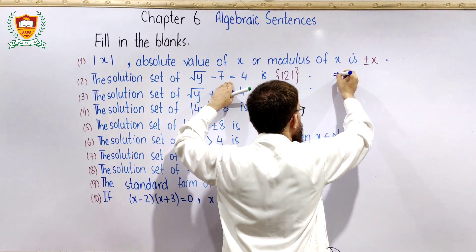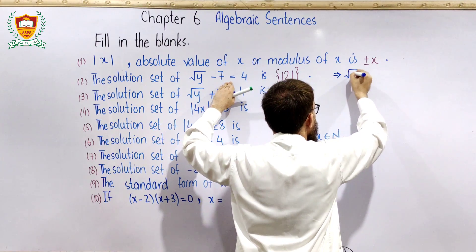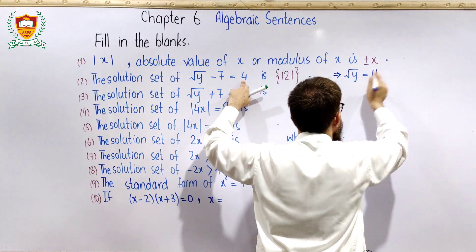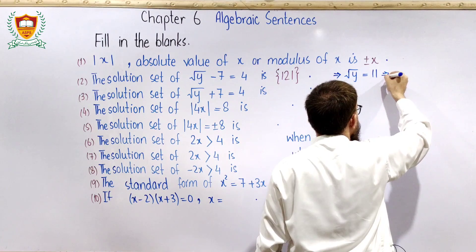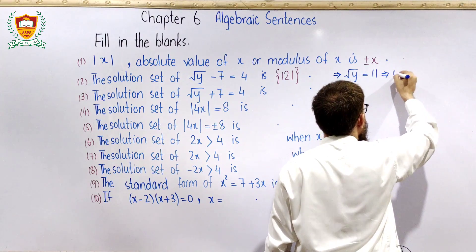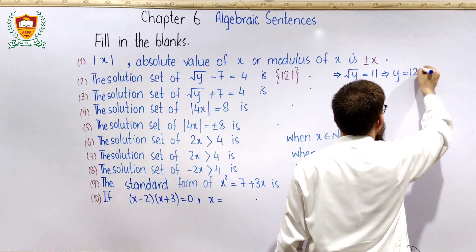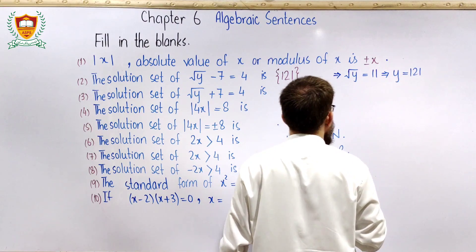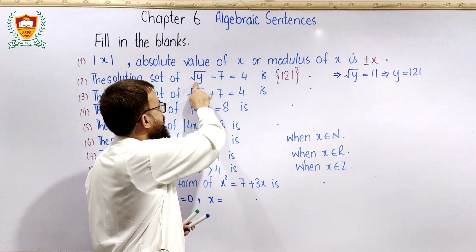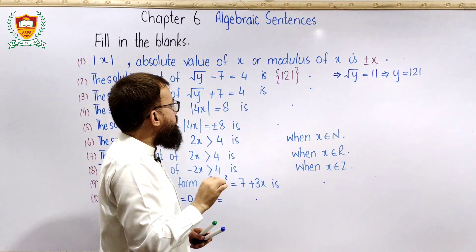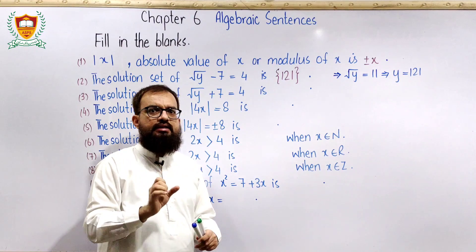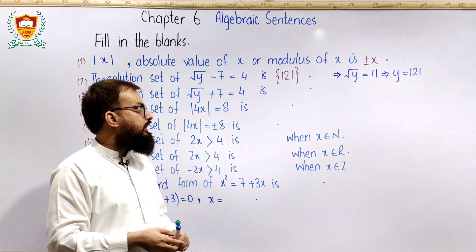Simplification: √y = 11، squaring on both sides سے y = 121 آتا ہے۔ Verification: √121 = 11، اور 11 − 7 = 4 — یہ verify ہو گیا، اس لیے answer درست ہے۔ اس طرح ہم نے √(y−7) = 4 کا solution set {121} حاصل کیا۔